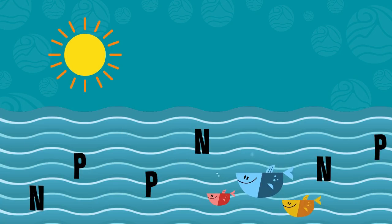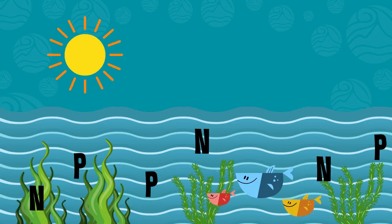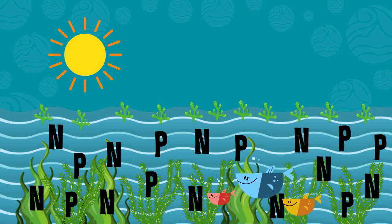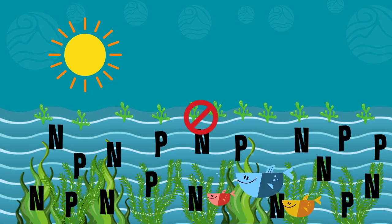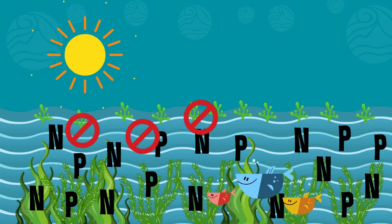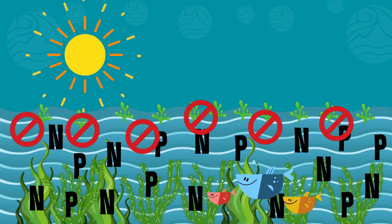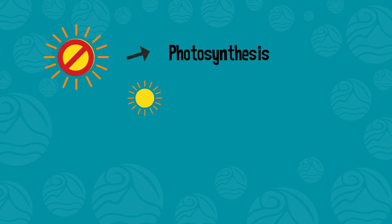In normal amounts, nutrients can help aquatic plants grow, but in excess they can lead to the overgrowth of algae and plants like duckweed, which can block sunlight from penetrating the water and reaching beneficial plants like submerged aquatic vegetation. The limited sunlight means photosynthesis — the process by which plants use sunlight to synthesize food and make energy from carbon dioxide and water — is impeded.